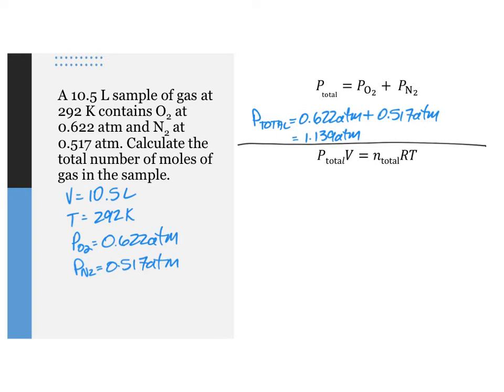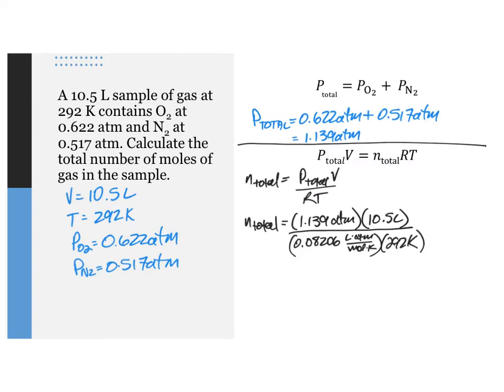Next, we'll rearrange the ideal gas law to calculate the number of moles of gas in the mixture. N total equals P total times V over RT. Dropping in the values, we get N total equals 1.139 atm times 10.5 liters divided by 0.08206 liter atm per mole kelvin times 292 kelvin equals 0.499 mole to three significant figures.